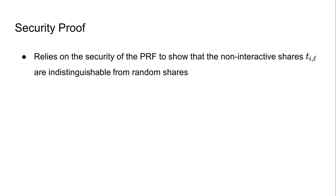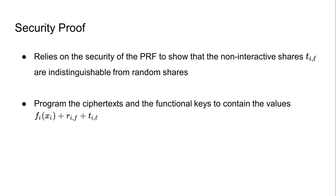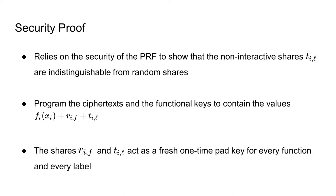The security of our construction relies on the security of the different primitives. We first rely on the security of the PRF to argue that the non-interactive secret shares t_{i,l} are computationally indistinguishable from randomly generated shares. We then program the ciphertext and functional keys so they only contain the sum of the individual function evaluation, the random share r_{i,f}, and the non-interactive label share t_{i,l}. These can be seen as a one-time pad encryption of the individual function evaluation using the sum of r_{i,f} and t_{i,l} as the key. Since r_{i,f} differs for every function f and t_{i,l} differs for every label, we obtain a fresh one-time pad key for every function-label combination, which is sufficient to argue indistinguishability of different ciphertexts.